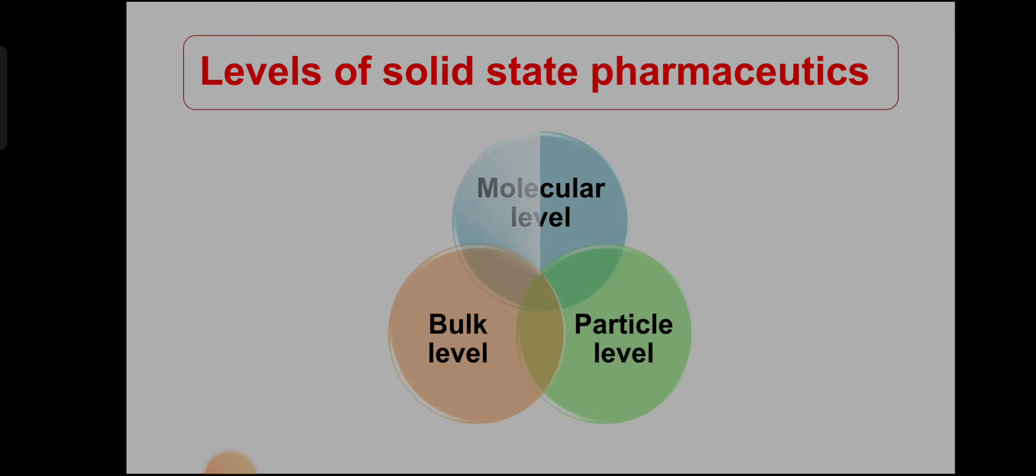So basically there are three levels of solid state pharmaceutics: molecular level, particle level and bulk level. And each property has specific importance in the formulation of solid dosage form, more correctly in any type of dosage form.